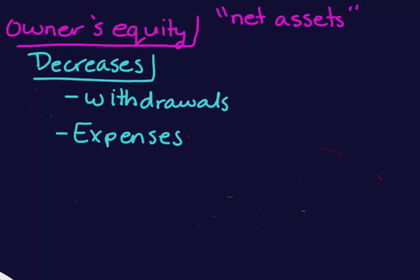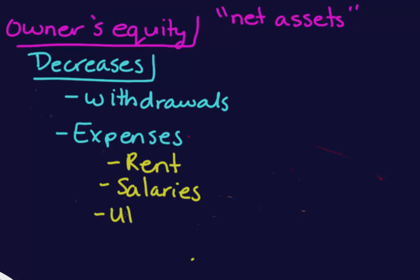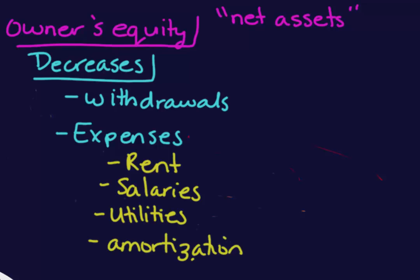Expenses are amounts that have been paid or will be paid for costs incurred to earn revenue. Some examples of expenses, other than the cost of the product you're selling, include rent on your office building or factory, salaries or wages paid to employees, utilities such as keeping your electricity on, and amortization — but we'll talk about that later.